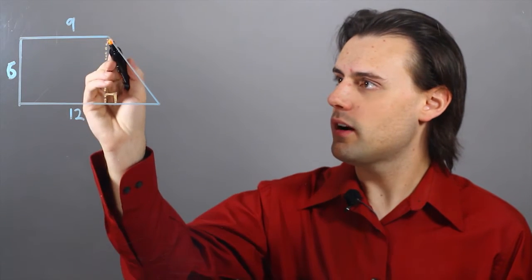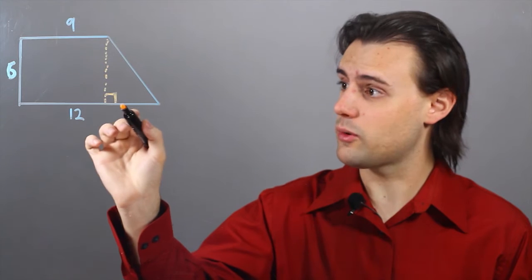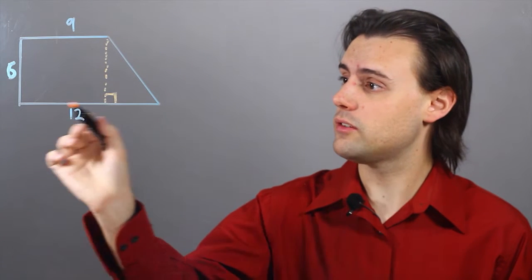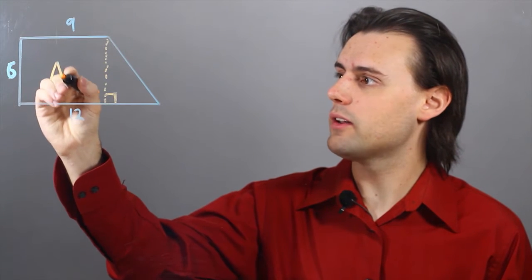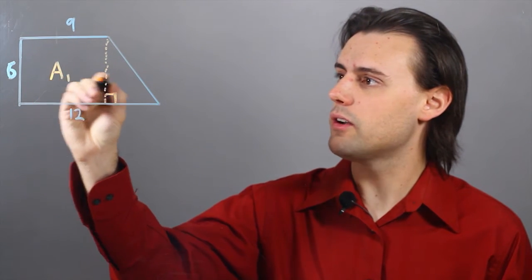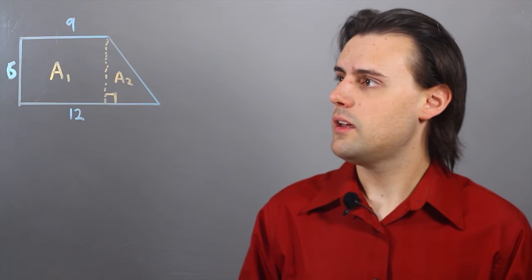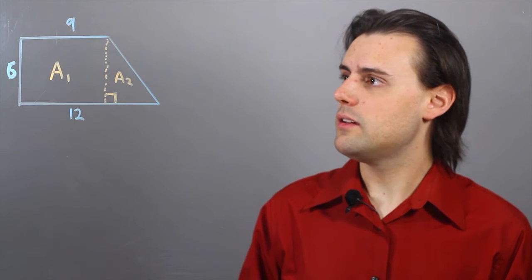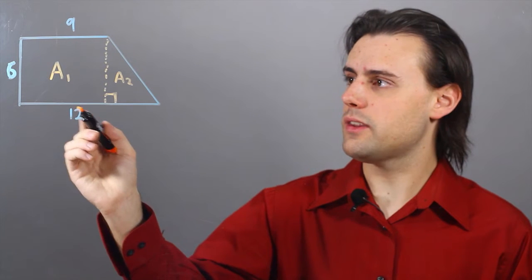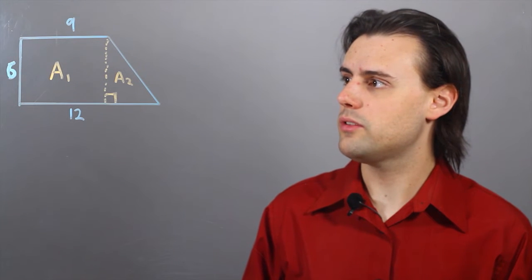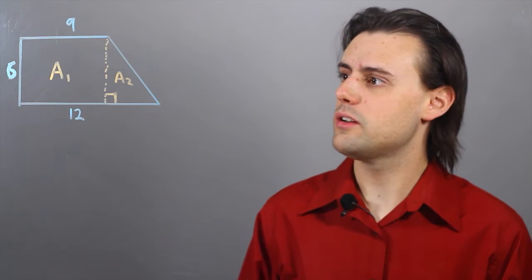Here I've drawn this line which is at a 90 degree angle to the base. So I'm going to have two areas here: area 1 and area 2. And now you see that the trapezoid is composed of simpler shapes.